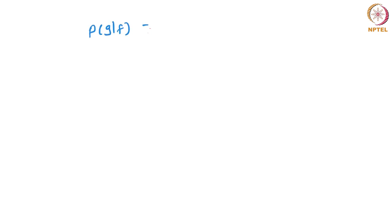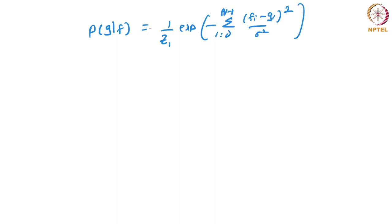P(G|F) can be rewritten as a normalization constant times exponential of minus the sum from i=0 to n-1 of (Fi minus Gi) squared divided by sigma squared. This assumes we treat each pixel as an independent random variable; the noise is Gaussian distributed, which is why there is a summation in the exponent.